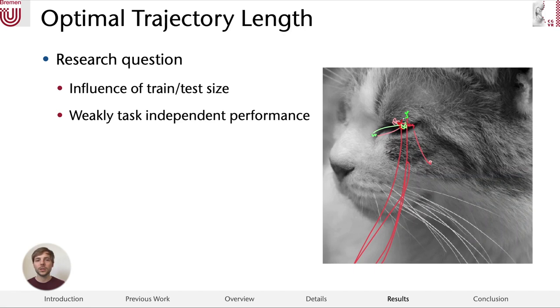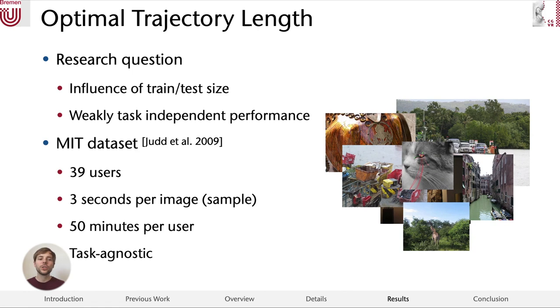Second, we take a look whether a weakly task-independent setting works for gaze biometrics. That is, the user this time does not have the same stimulus for training and testing, but in both cases has very different stimuli. For this, we use a new dataset. Namely, the MIT dataset by Judd et al. from 2009. Here, 39 users looked at photos for 3 seconds each. Overall, each user looked at the photos for 50 minutes.